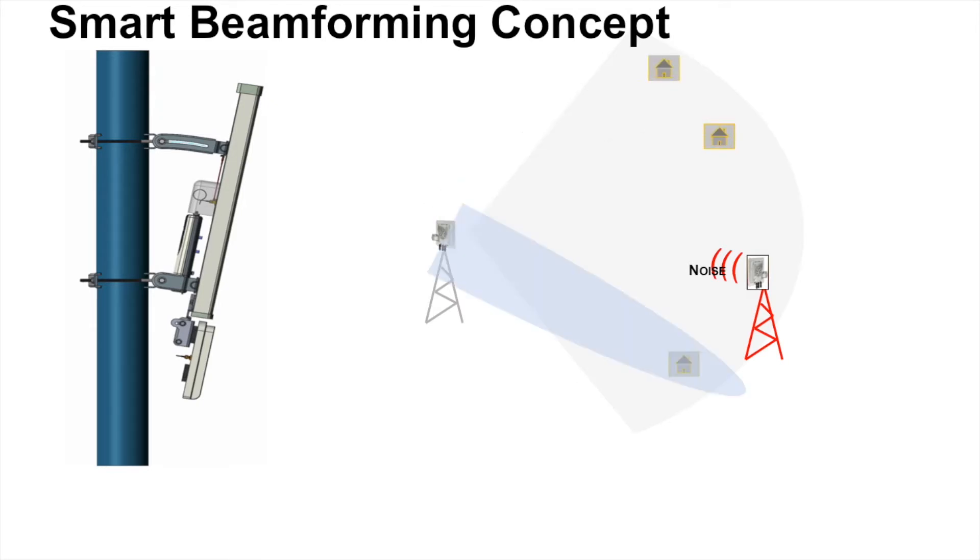So a nice solution that the beamforming offers is there's multiple antenna patterns and beams created to each and every subscriber module that's talking back to the Cambium base station that eliminates that noise. It's a more narrow approach instead of opening yourself up to that whole 90 degree.